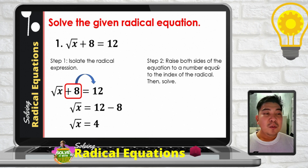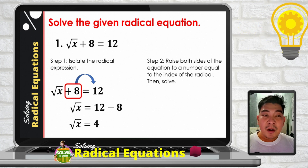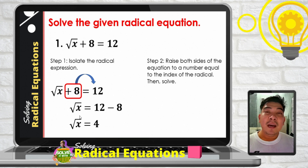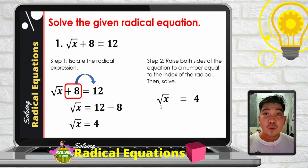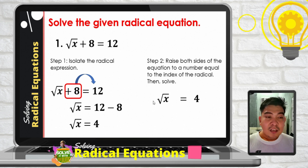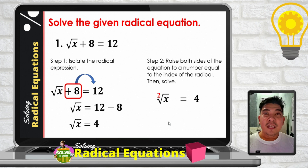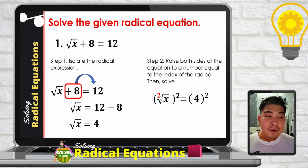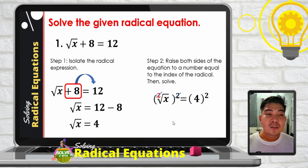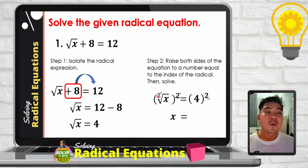Step 2: raise both sides of the equation to a number equal to the index of the radical, then solve. The index of square root of x is 2, so we raise both sides by 2. The square root of x squared gives us x, and 4 squared gives us 16. So x equals 16.